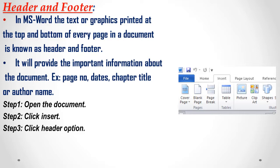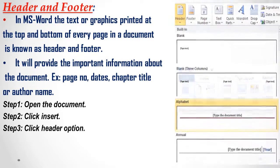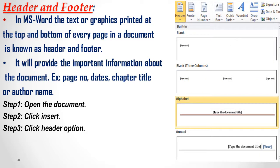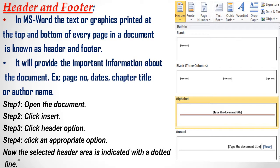After clicking the Insert tab, you will see many options; click the Header option. You can see Header, Footer, and Page Number options. Click on Header, and a drop-down list will appear with many header style options — for example, one with text on one side, one with text on three sides, and one with a red color line in the middle.